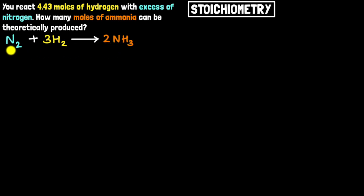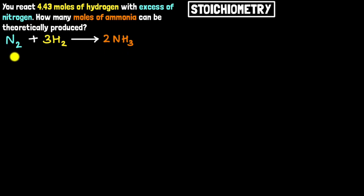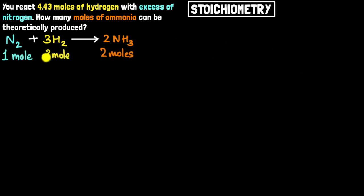It's also saying that if I had one dozen molecules of nitrogen, it will react with three dozen molecules of hydrogen to give two dozen molecules of ammonia. Or in other words, if I had one Avogadro number of nitrogen molecules — meaning one mole of nitrogen — it would react with three moles of hydrogen to give two moles of ammonia.